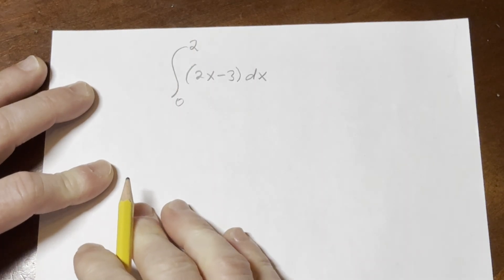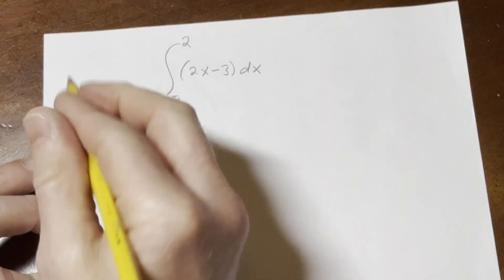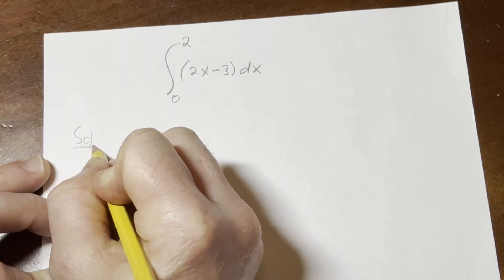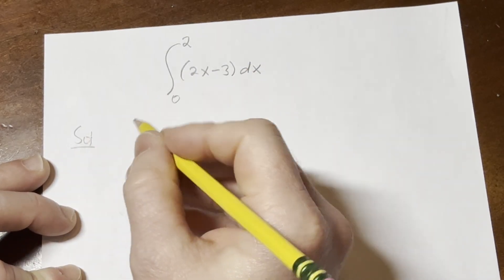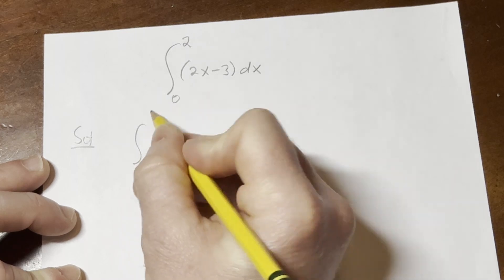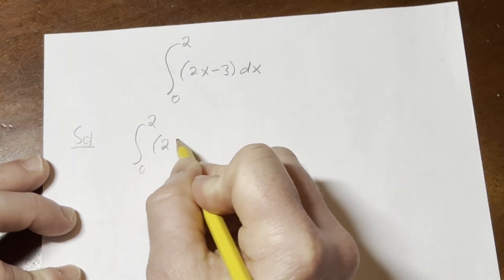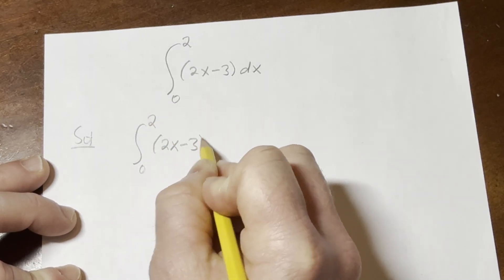Okay, so we have to perform the integration here. Let's go ahead and go through it. Solution. So I'll start by writing down the definite integral one more time. So we're going from 0 to 2 and we have 2x minus 3 dx.